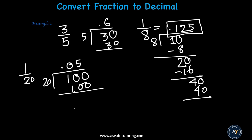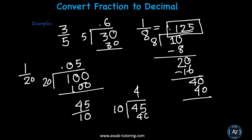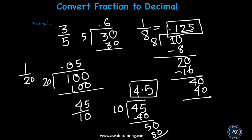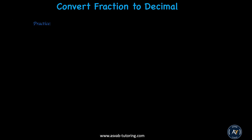Let's do another problem: 45 divided by 10. So, 10 into 45. How many times does 10 go into 45? 4 times. 4 times 10 is 40. Subtract it, you get 5. Put a decimal here, and bring the 0 down. How many times does 10 go into 50? 5 times. 5 times 10 is 50. Makes sense? Great.